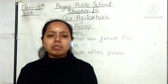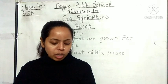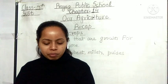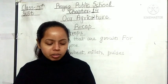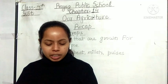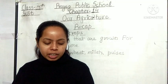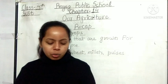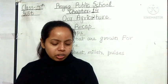Next is livestock — pashu palan. Cows and bullocks are called cattle. Cows, buffalo, goats, and camels give milk — inhe hum milk cattle kehte hain. Milk and milk products like cheese, butter, and ghee come from these animals. We also get wool from sheep, camels, and goats — wool ka matlab hota hai oon.